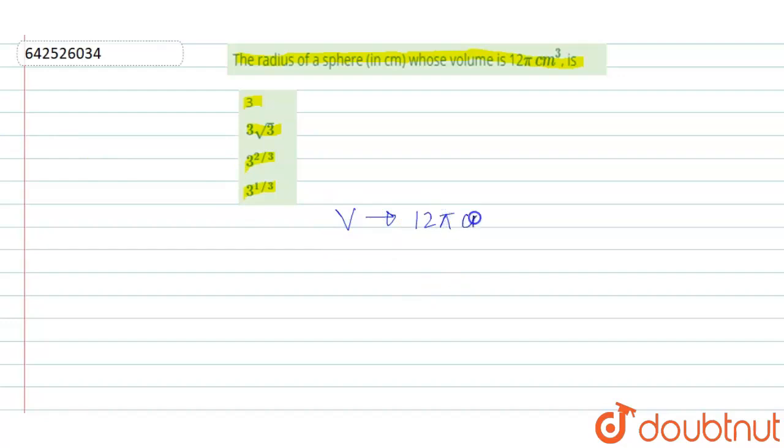The question gives us a volume of 12 pi centimeter cube. Volume of any general sphere is equal to 4 upon 3 pi r cube. Here, according to the question, 12 pi equals 4 upon 3 pi r cube.